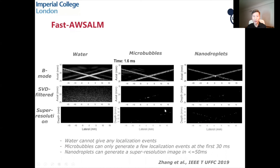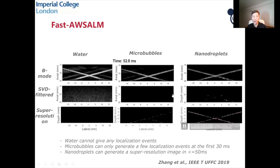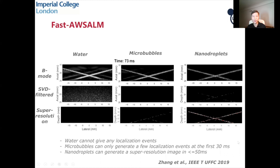More recently, we developed a fast version of AWESOME by changing the type of nano droplets — the phase change contrast agent we use. We can now use plane wave to activate and image them at the same time. With water, nothing happens. For microbubbles, you see some signal and accumulation that stops when no bubbles remain. But with nano droplets being turned on and off, you see flashing signals and can detect and accumulate the localization. Even within 50 milliseconds, you can generate a pretty decent super-resolution image.